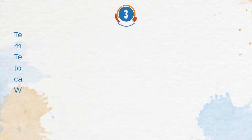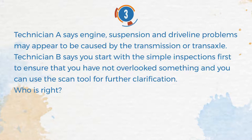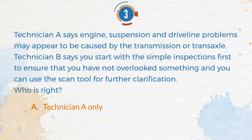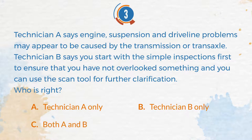Number 3. Technician A says engine, suspension, and driveline problems may appear to be caused by the transmission or transaxle. Technician B says you start with the simple inspections first to ensure that you have not overlooked something, and you can use the scan tool for further clarification. Who is right? A. Technician A only. B. Technician B only. C. Both A and B. D. Neither A nor B.